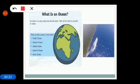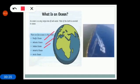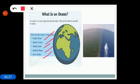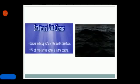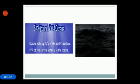There are 5 oceans in the world. Pacific Ocean, Atlantic Ocean, Indian Ocean, Antarctic Ocean and Arctic Ocean. You know that oceans make up 70% of the earth's surface. 97% of the earth's water is in the oceans.